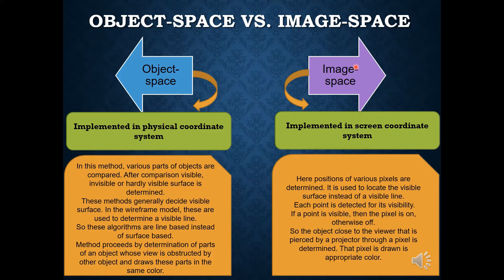The object space method is implemented in the physical coordinate system, while the image space method is implemented in the screen coordinate system. In the object space method, the various parts of the object will be compared. After comparison, visible, invisible, or hardly visible surfaces are determined.